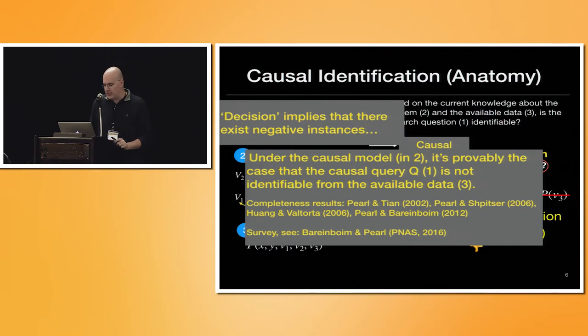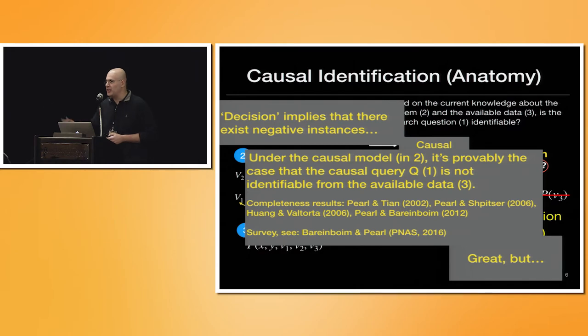I will not read the whole passage here, but essentially what I'm saying that there are completeness results. There are some authors here about the completeness started from Pearl and Tian, 2002, that when you have a collection of observational and experimental data, we know that this yes and no answer is all what you need. I recommend that in my bias way at the advertisement here, our survey in the Proceedings of the National Academy of Science, that we are trying to summarize some of these results. That's great. I'm very proud. I hope that the community is proud. This is very great. Congratulations.